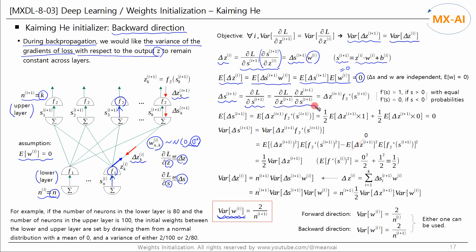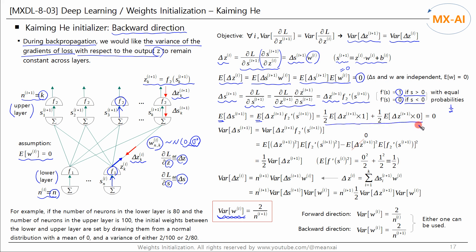Applying the chain rule, the first factor is delta Z_{i+1}, and since Z_{i+1} is F2 of S_{i+1}, the next factor is F2 prime of S_{i+1}. Taking the expectation on both sides: if S is positive, F prime of S is 1; if S is negative, F prime of S is 0. The probability that S is positive or negative is one half each. Therefore, the expected value of delta S_{i+1} can be written accordingly. Since the expected value of delta Z_i is 0, the expected value of delta Z_{i+1} can also be 0, so the expected value of delta S_{i+1} is 0.